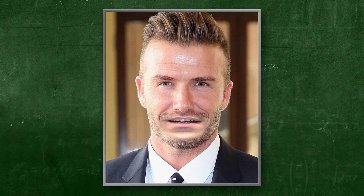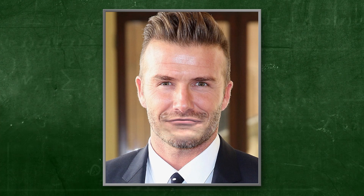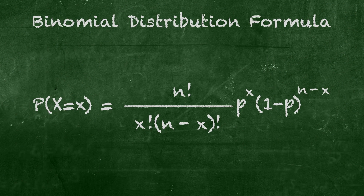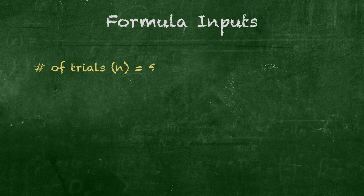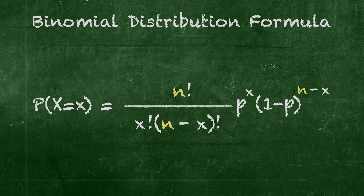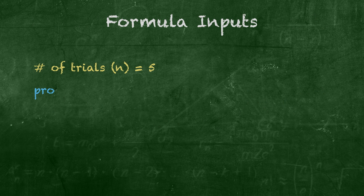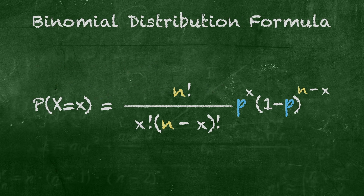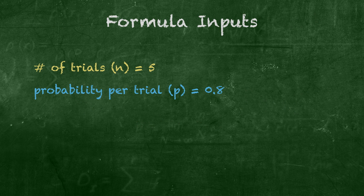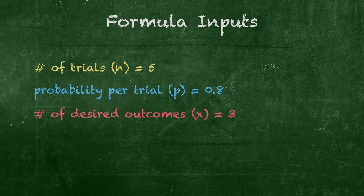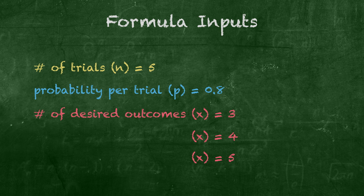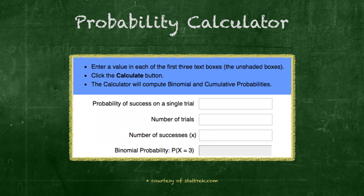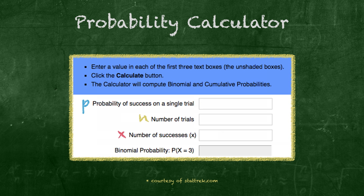There's a formula for calculating the various outcomes, which I'm flashing here. But I personally believe it's much more important to understand what the formula does than the memorization of the formula itself. In every Binomial experiment, we need to establish our inputs: the number of trials, n — in this case n equals 5; the probability of success per trial, p — in this case p equals 0.8; and the number of successful outcomes we desire, x. Let's solve for x equals 3, 4, and 5 successful kicks. You can also do an internet search for a Binomial Distribution Calculator, which asks for those same three inputs: n, p, and x.